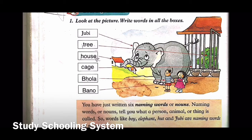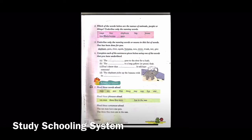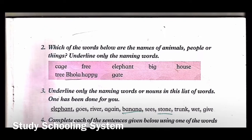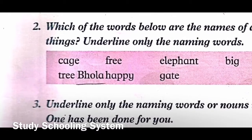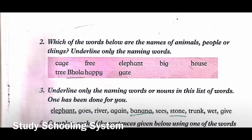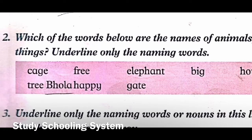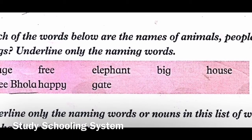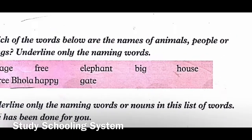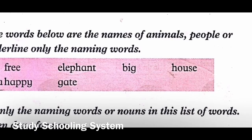These are all naming words or nouns. Now come to page 23. Exercise two: which of the words below are the names of animals, people, or things? Underline only the naming words. We will not underline adjectives or describing words. 'Cage' is a thing - yes, it is a noun, underline it. 'Free' is not a noun, it is a describing word - an adjective, do not underline it. 'Elephant' is an animal - it's a noun, underline it.